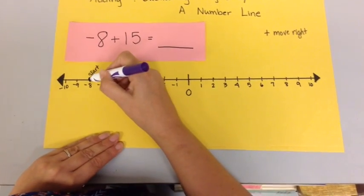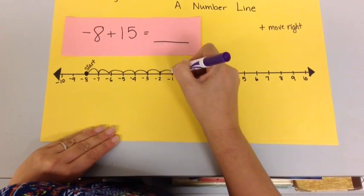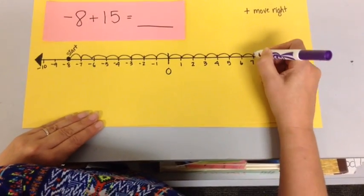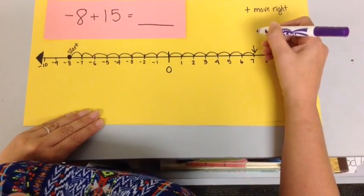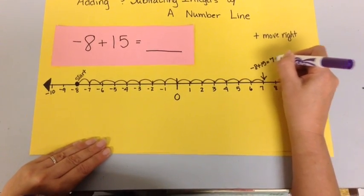and I'm moving to the right. 1, 2, 3, 4, 5, 6, 7, 8, 9, 10, 11, 12, 13, 14, 15. So, negative 8 plus 15 equals 7.